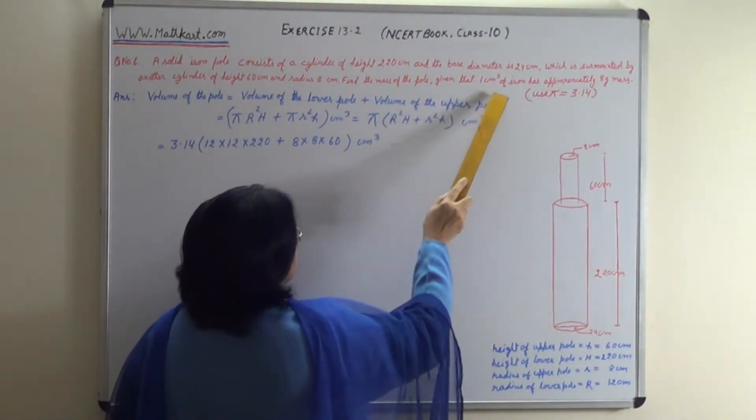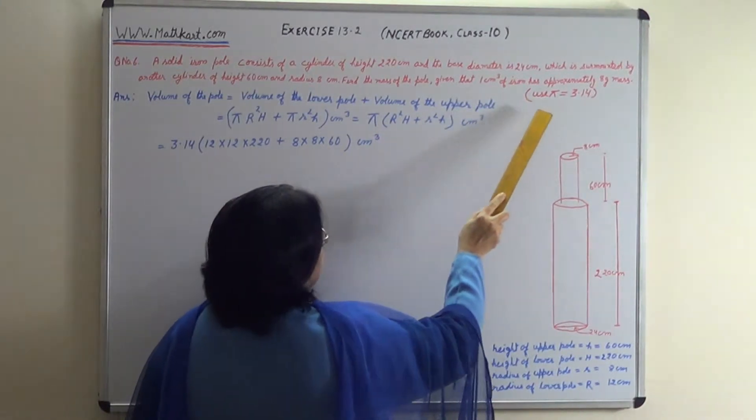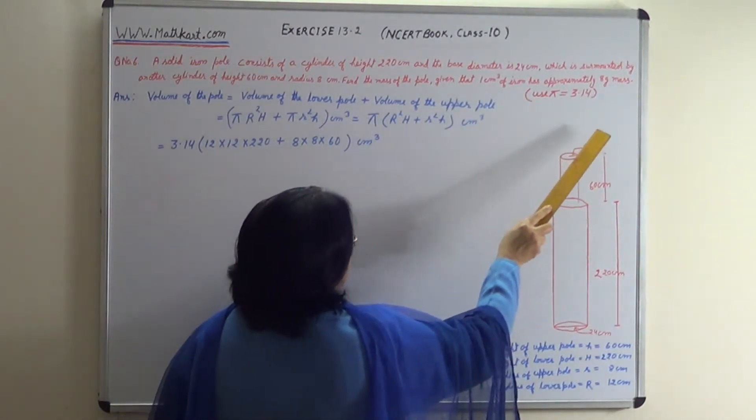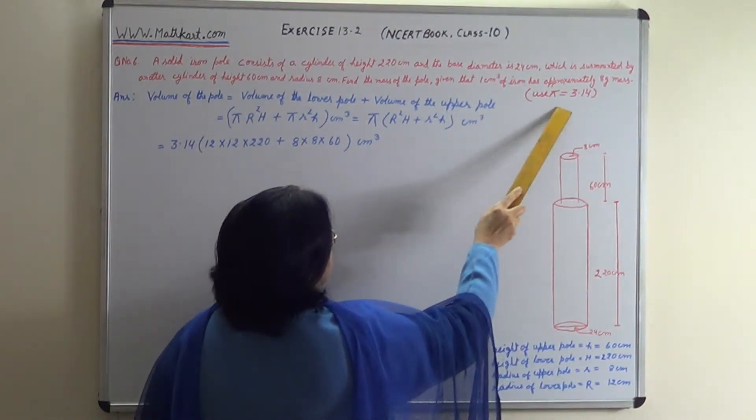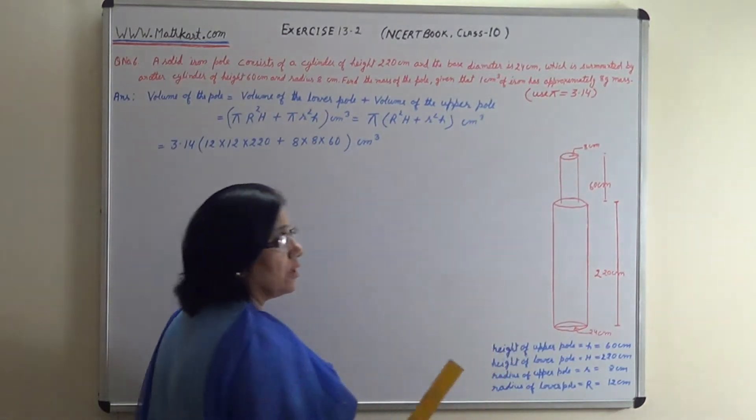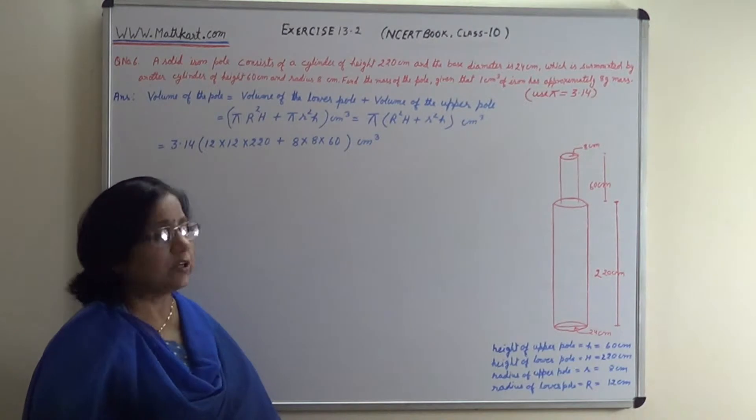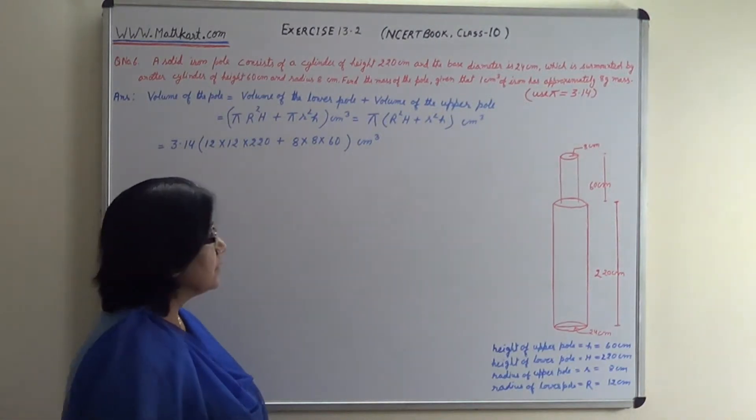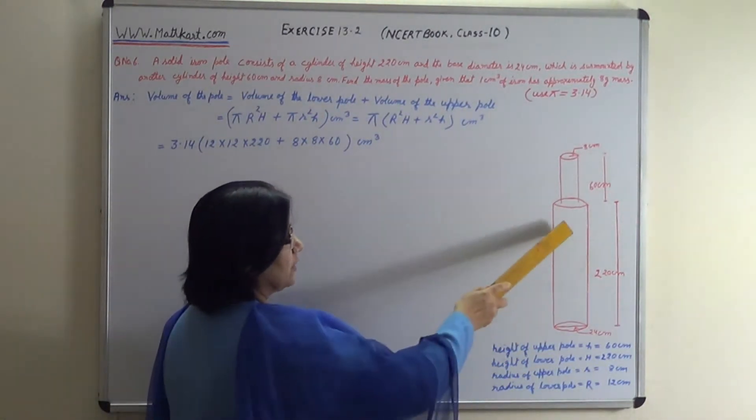Given that 1 cubic cm of iron has approximately 8 gram mass. Use pi equals 3.14. The figure is drawn here showing the pole structure.